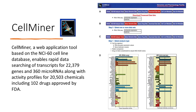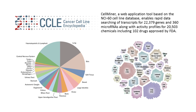For example, the NCI60 cell line database, supported by NCI, contains numerous genomics and pharmacological response platforms. CellMiner, a web application tool based on the NCI60 cell line database, enables rapid data searching of transcripts for 22,379 genes and 360 microRNAs, along with activity profiles for 20,503 chemicals including 102 FDA-approved drugs.